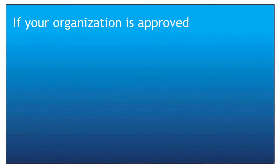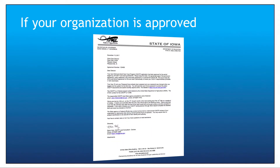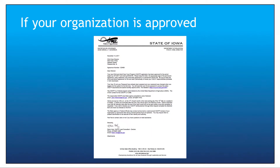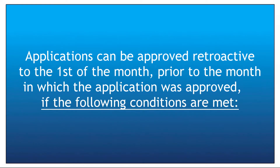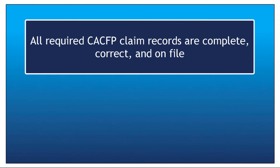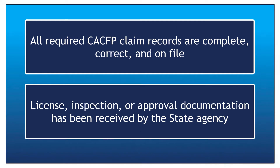If your organization is approved, you will receive a letter with the beginning date of approval. Applications can be approved retroactive to the first of the month prior to the month in which the application was approved, if the following conditions are met: all required CACFP records are complete, correct, and on file as documented at the pre-approval visit, and license inspection or approval documentation has been received by the state agency.